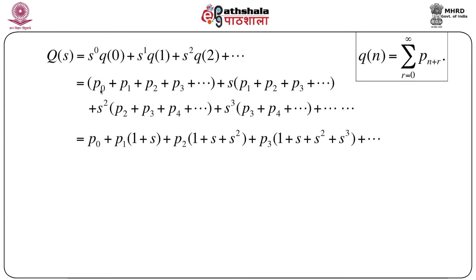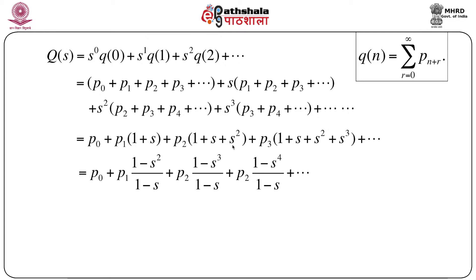Separating terms with respect to p_0, p_1, p_2, etc.: p_0 occurs only once, p_1 occurs in the first and second terms giving p_1(1 + s), p_2 gives p_2(1 + s + s^2), p_3 gives p_3(1 + s + s^2 + s^3), and so on. From elementary algebra, 1+s = (1-s^2)/(1-s), and 1+s+s^2 = (1-s^3)/(1-s), and so on.